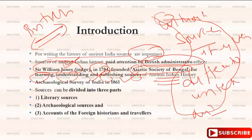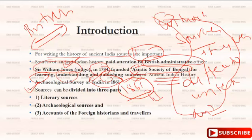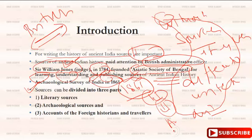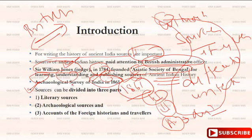In the field of archaeological sources, the British East India Company established an archaeological department in 1861. Through this department, they started analyzing and excavating the archaeological sources so that they could produce a good complement to literary sources.